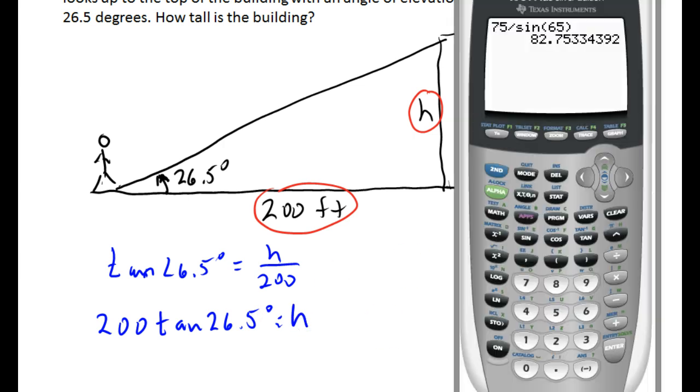Bring up our calculator. And 200 tangent 26.5 is 99.7 feet. We'll call it 100.